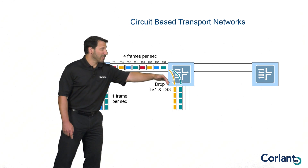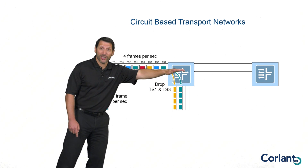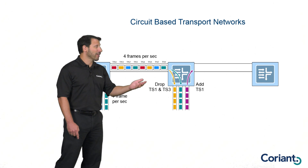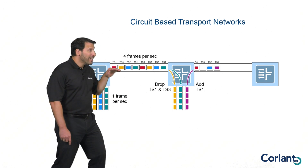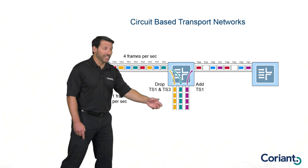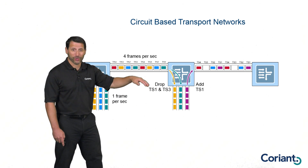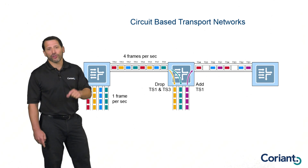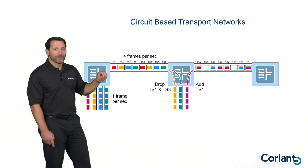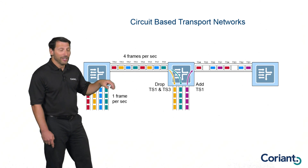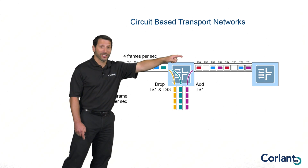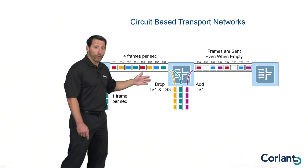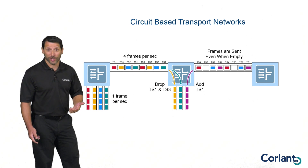Now I've dropped time slots one and three, so on the next transmission out the other direction, those time slots are empty. I can also add traffic to time slot one at the same time. I'm sending information out, and I can add this purple traffic to take the place of the green traffic that was dropped, filling time slot one. One key aspect of circuit-based transmission is that frames are transmitted in the same order on a very regular basis — meaning even though I don't have any information in time slot three, I'll still transmit empty frames to maintain my frame order.